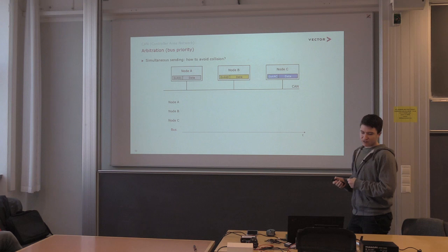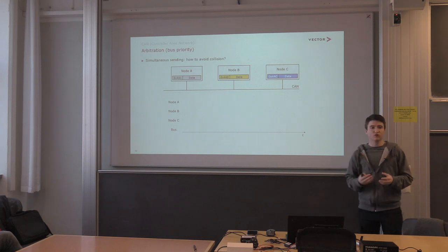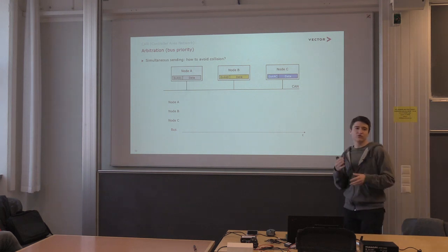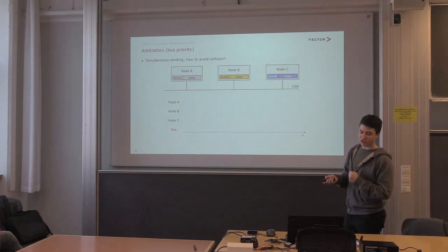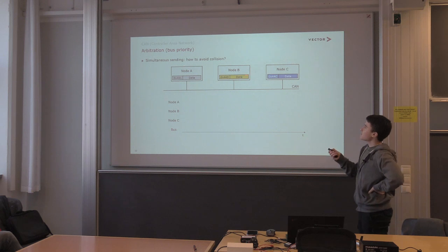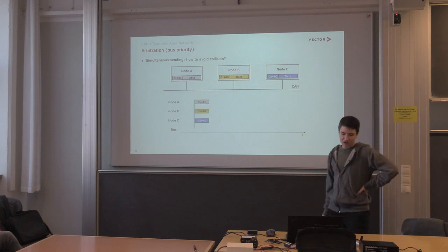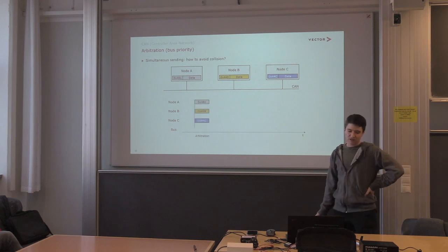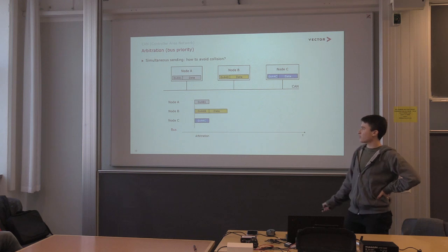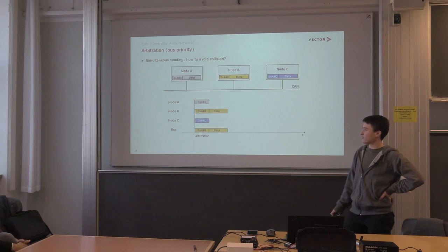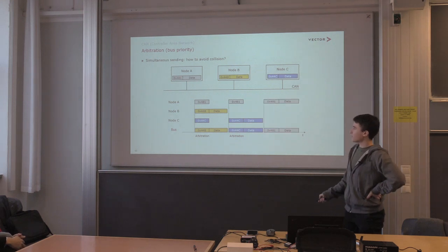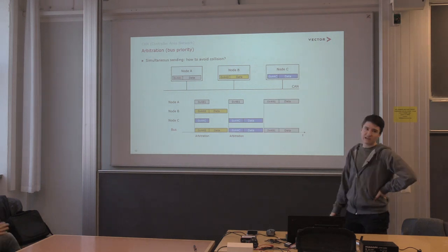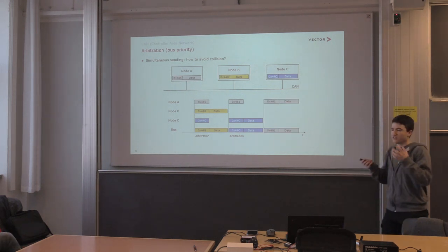Now let's address CAN's event-controlled nature: multiple nodes can send whenever they want. How do we resolve simultaneous transmission? Suppose nodes A, B, and C all want to send at the same time. Through a process called arbitration, the protocol determines that B gets to send first, then C, and finally A.